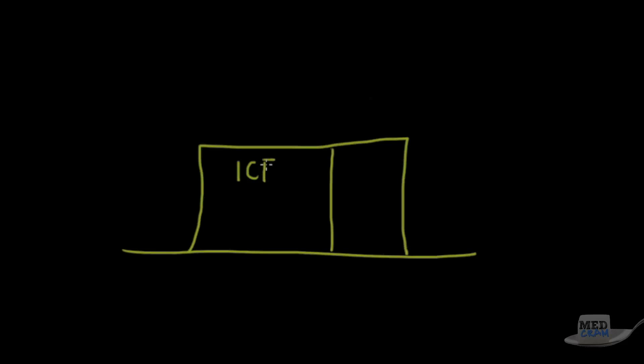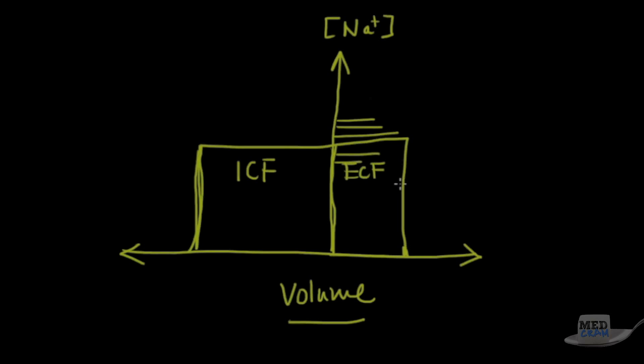This is going to be the intracellular fluid, and this is going to be the extracellular fluid. Why do I have it drawn this way as a vertical and a horizontal? Well, if you imagine these are x and y axes, the x-axis is going to represent volume - this dimension represents how much volume is in there. The y-axis is going to demonstrate the sodium concentration. So the higher this is on the y-axis, the higher the concentration of sodium. The farther out this goes on the x-axis, the more volume there is. Because of that, you'll note that the area simply represents the number of sodium molecules.